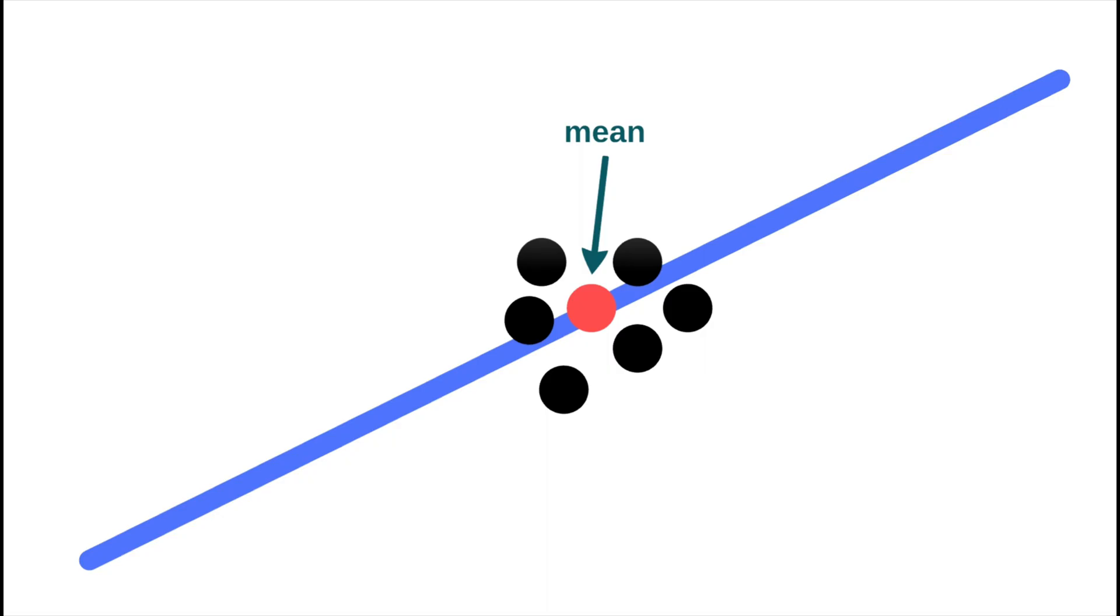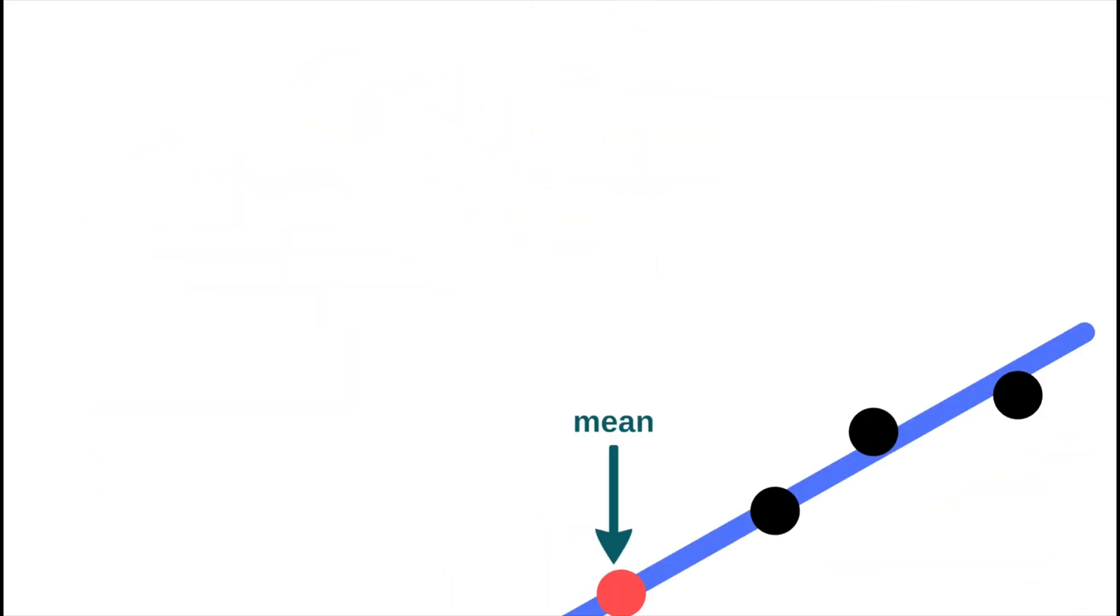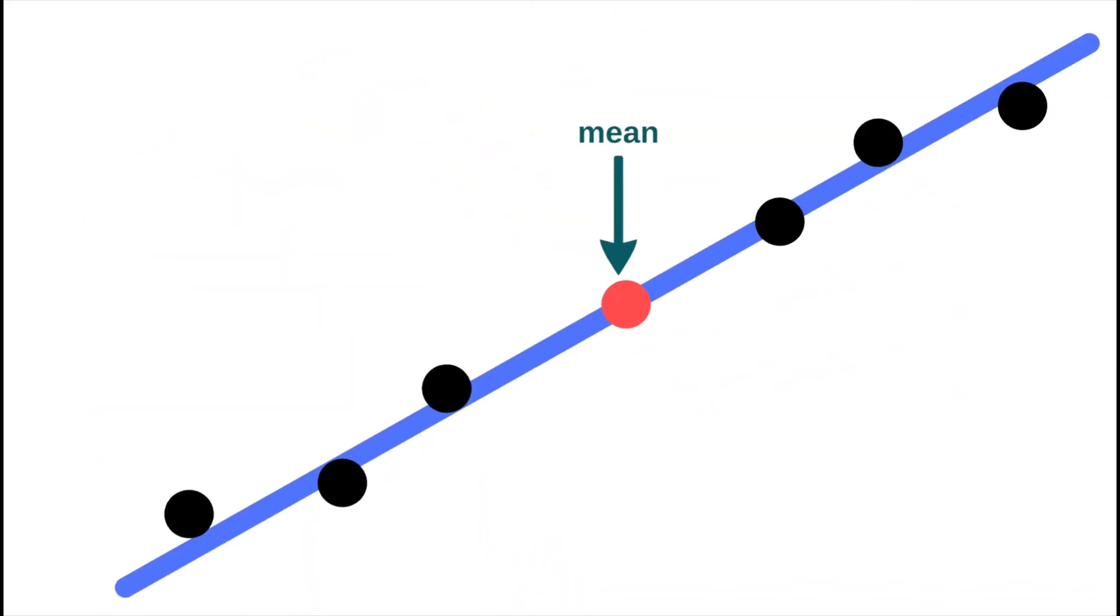If the values are close to the mean of the entire series, shown here in red, we speak of a small spread. However, if the values are far from the mean, we can speak of a large spread.